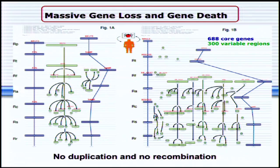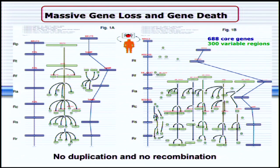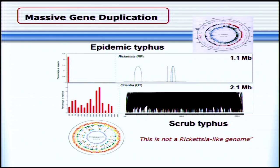For several years, we thought that this is the only thing that happens to obligate intracellular parasites — they discard genes and gradually become smaller and smaller, as John McCutcheon described very nicely this morning. I thought there were no duplications and no recombinations. And then a Chinese-Korean group sequenced the scrub typhus pathogen, which is a really close relative to Rickettsia, formerly called Rickettsia tsutsugamushi, and this genome has more than 50% repeated sequences.